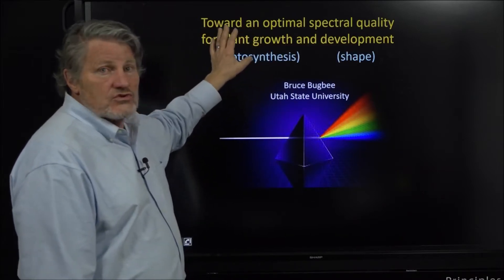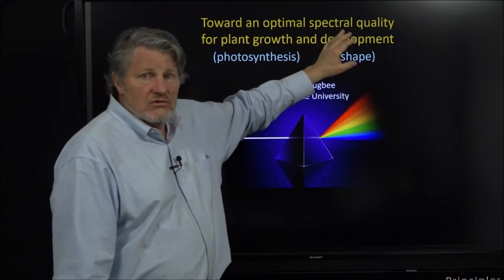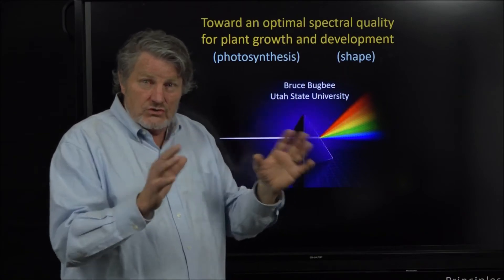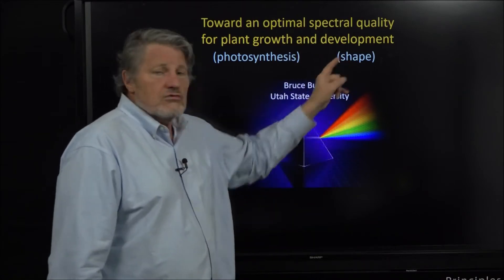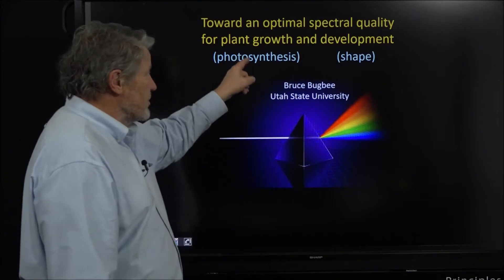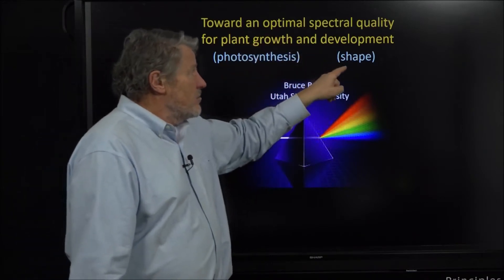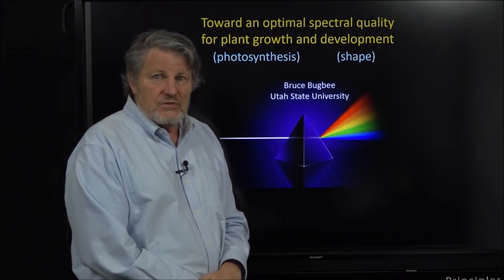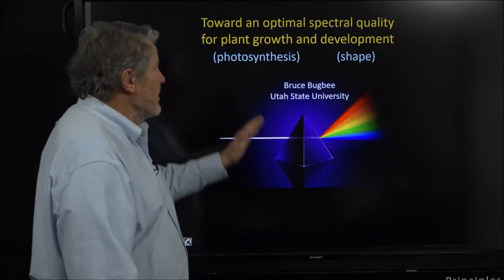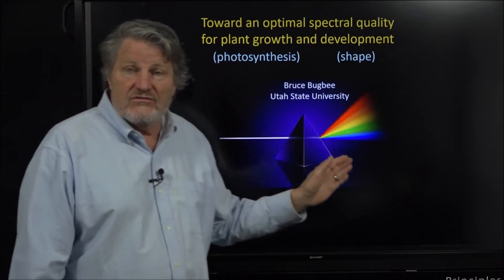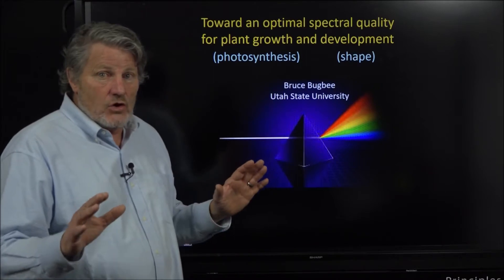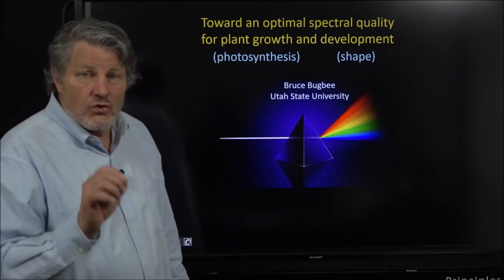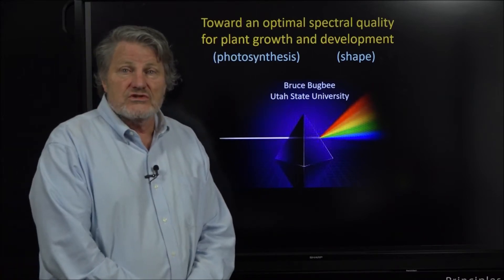Spectral quality has an effect on photosynthesis but it has a much bigger effect on plant shape. Most of the time when we're changing ratios of colors we're doing it to affect plant shape. Plant shape varies among species - different species have different responses to spectral quality. Photosynthesis does not vary among species much at all, but there's evidence that our historic definition of photosynthetic photons is now coming into question.